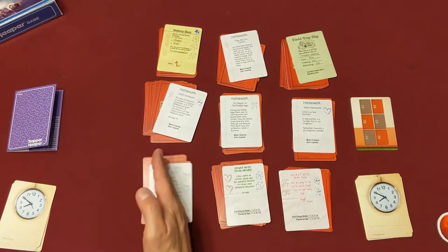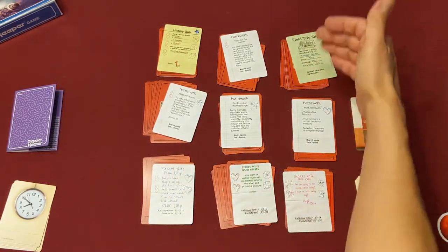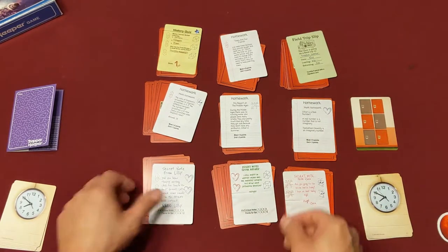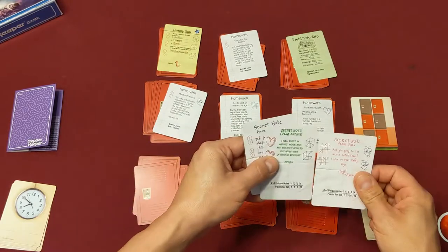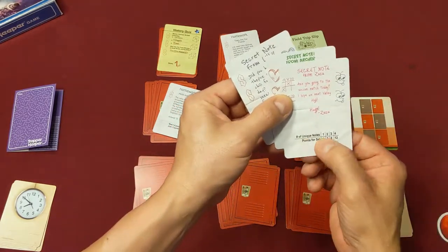So at this point I have three choices. I can take either one of these columns, I can take either one of these rows, or I can take the orientation that's shown there. So let's just say I take this bottom one here. So I get a note from Lily, a note from Archer, and I get a note from Zuzu, which is great.